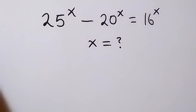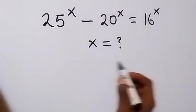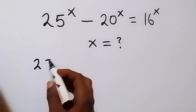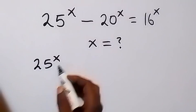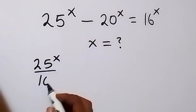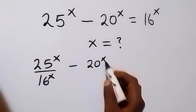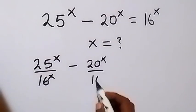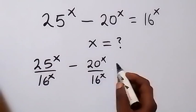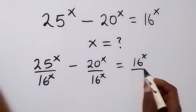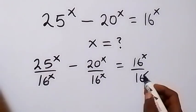Hello, you are welcome. How to solve this nice exponent problem? We can divide through by 16 raised to power x, and this becomes 25 raised to power x over 16 raised to power x, then minus 20 raised to power x over 16 raised to power x, equals to 16 raised to power x over 16 raised to power x.